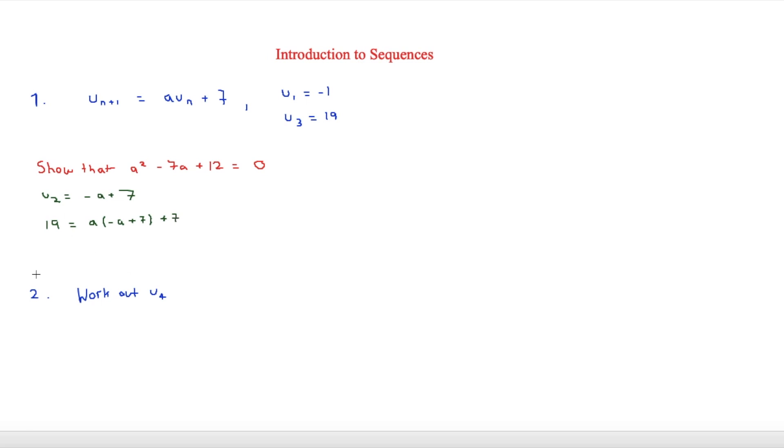Now, all we have to do is start rearranging this so we can get it back to this form. And in order to do that, we're going to have 19 is equal to minus a squared plus 7a and plus 7. And you may be able to notice now that we basically have it there. We just have to put it all onto one side.